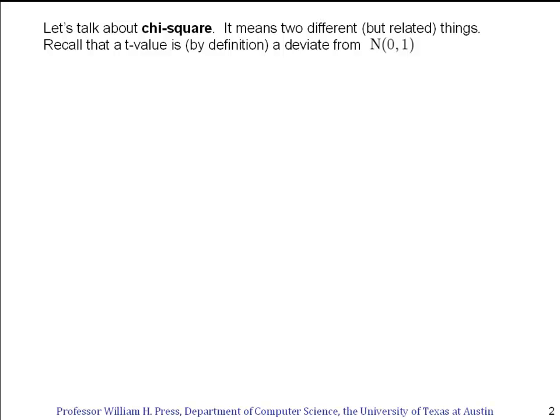This is a short segment on the topic of chi-square. The term chi-square means two different but related things, and we're going to define them both here. Remember from previous segments that a t-value by definition is a deviate from the normal distribution with mean zero and standard deviation one.